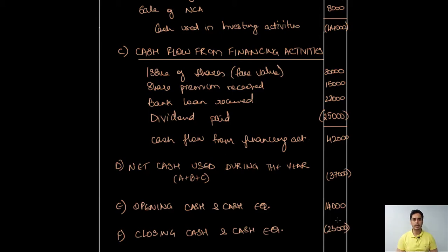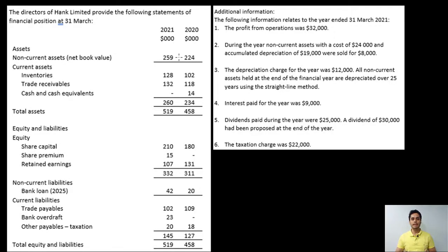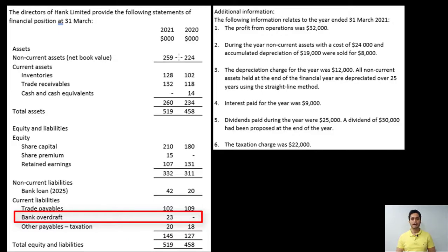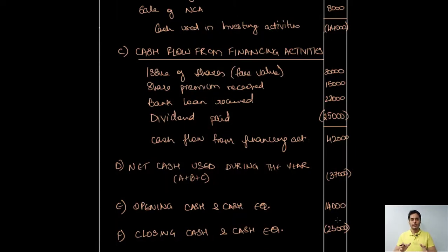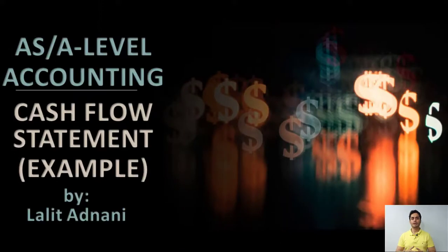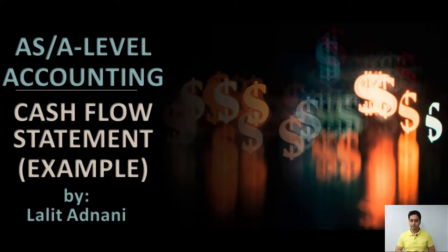As per the cash flow statement, the closing cash and cash equivalents is negative 23,000. Reconciling this with the balance sheet, we see there is a bank overdraft of 23,000 — they match perfectly. When the closing cash and cash equivalents per the cash flow statement matches the balance sheet, it confirms all transactions have been captured and there are no arithmetical errors. I hope this video has made preparing a cash flow statement much clearer. Please like and share the video so it can reach and help as many students as possible — see you in the next video!